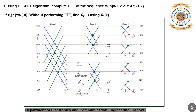x1(3), x1(4), x1(5), x1(6), and x1(7). The values given are 1, 2, minus 1, 2, 4, 2, minus 1, 2. We are supposed to find the DFT values X(k).